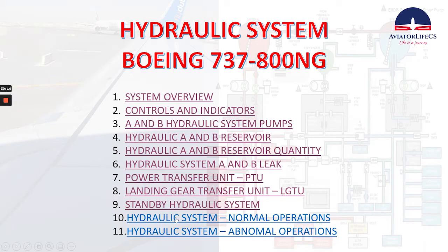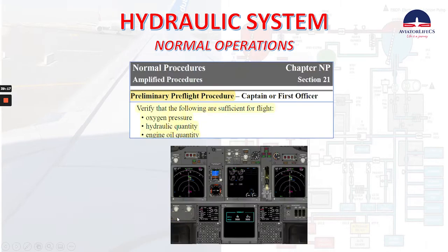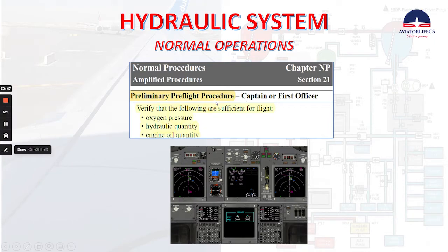Now we will talk about hydraulic system normal operations. I took some extracts from FCOM Volume 1 that refer to the hydraulic system. For the preliminary pre-flight procedure, we need to verify that the following are sufficient for flight: oxygen pressure, hydraulic quantity, and engine oil quantity. We press the system switch on the MFD and we will get the hydraulic quantity and pressure.